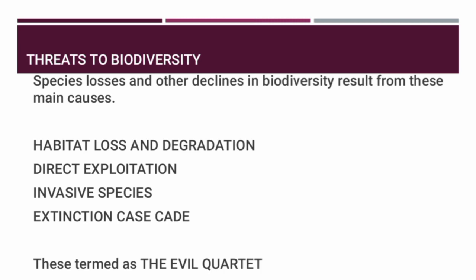Next is threats to biodiversity. Species losses and other declines in biodiversity result from these main causes: habitat loss and degradation, direct exploitation, invasive species, and extinction cascade. These four have been termed the evil quartet.